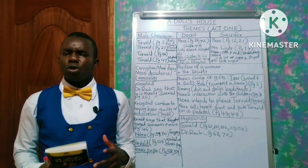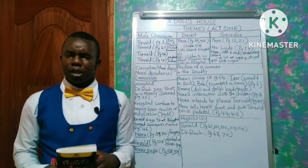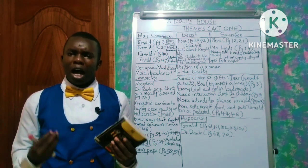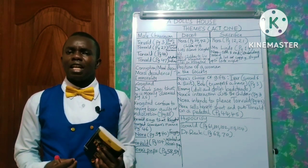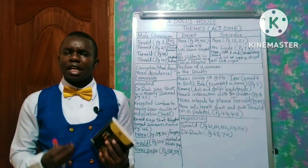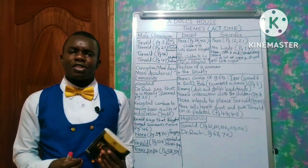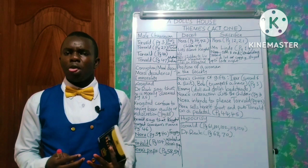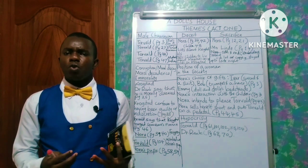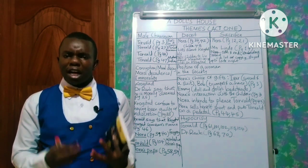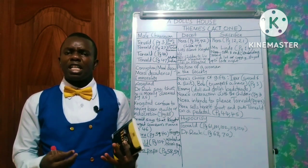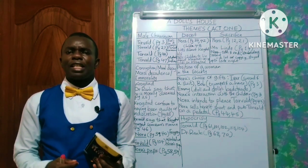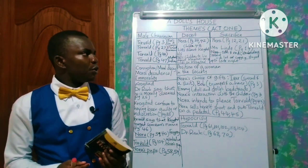In that table, you should have various columns. In these columns, you are going to have the various thematic concerns or issues that have been raised in this text. Because as we know, most of the questions normally frame the various themes that are evident in the text.